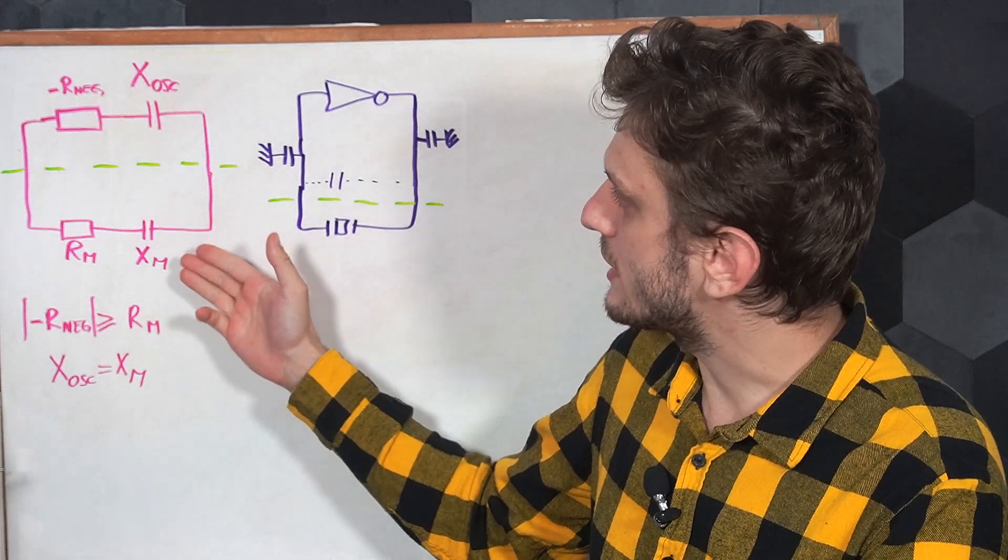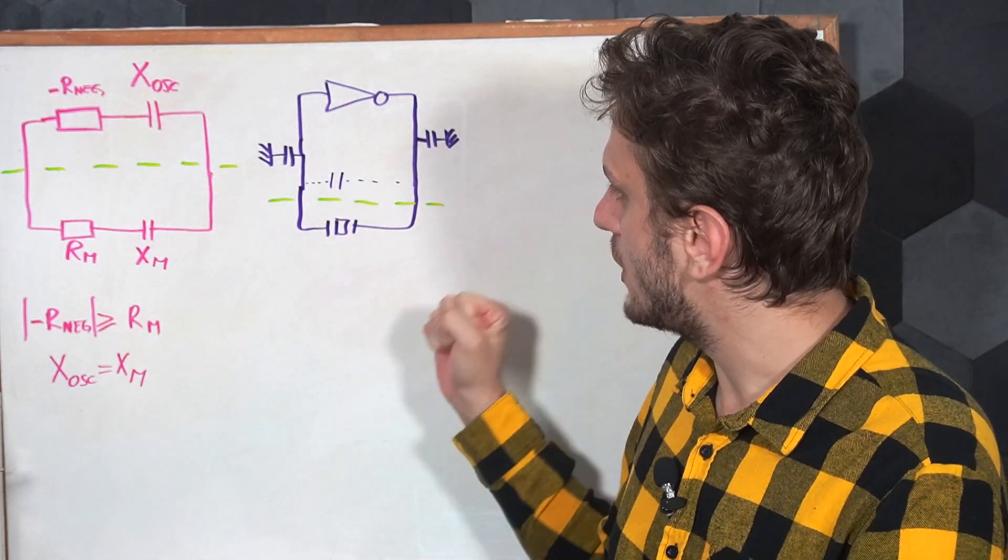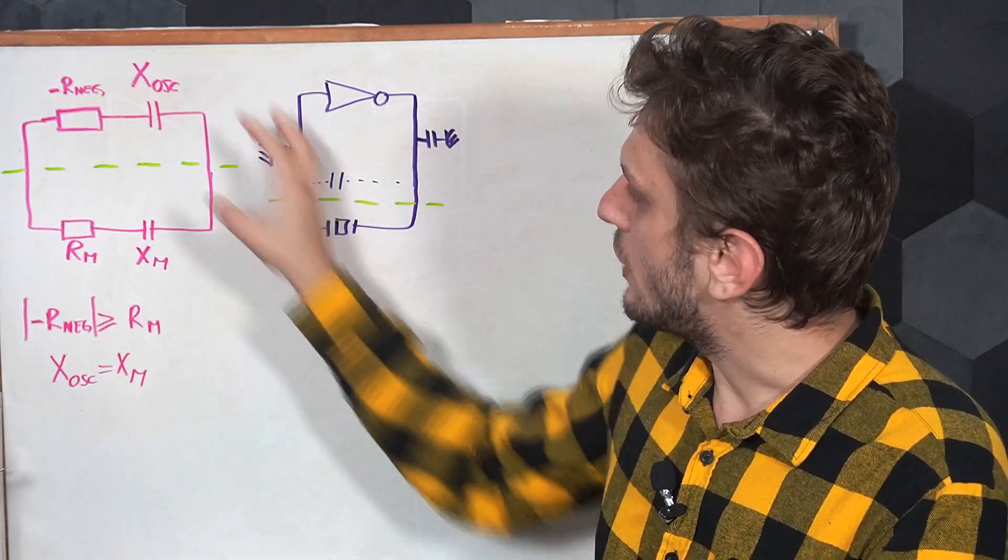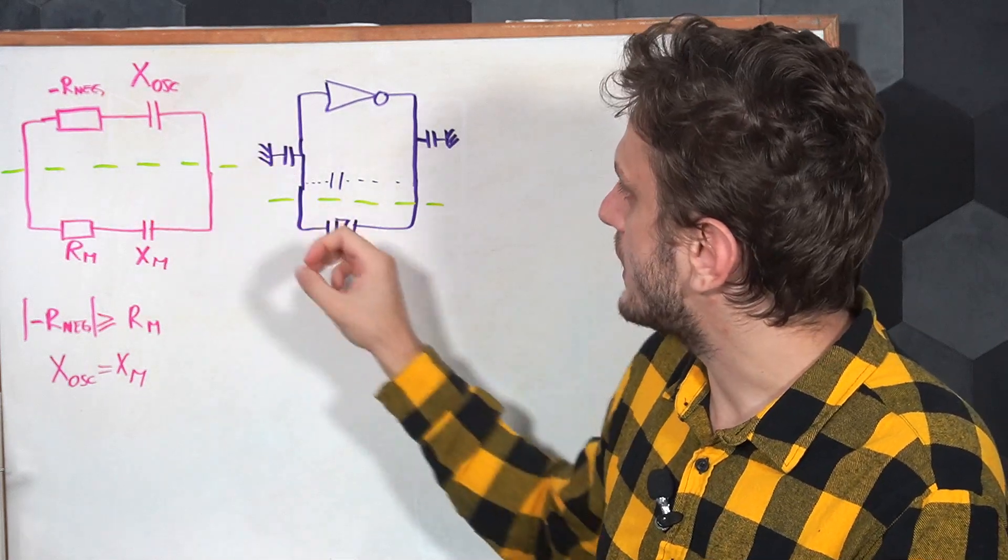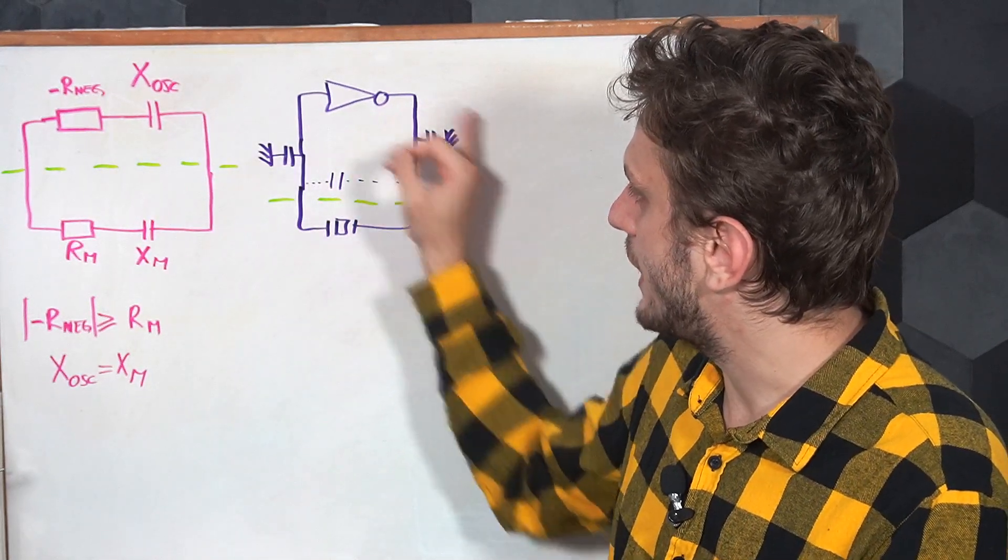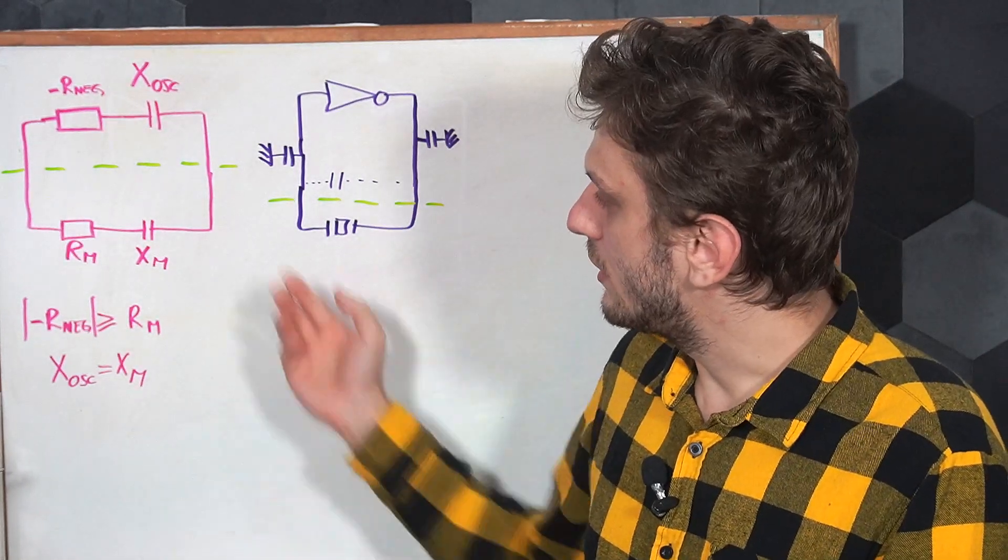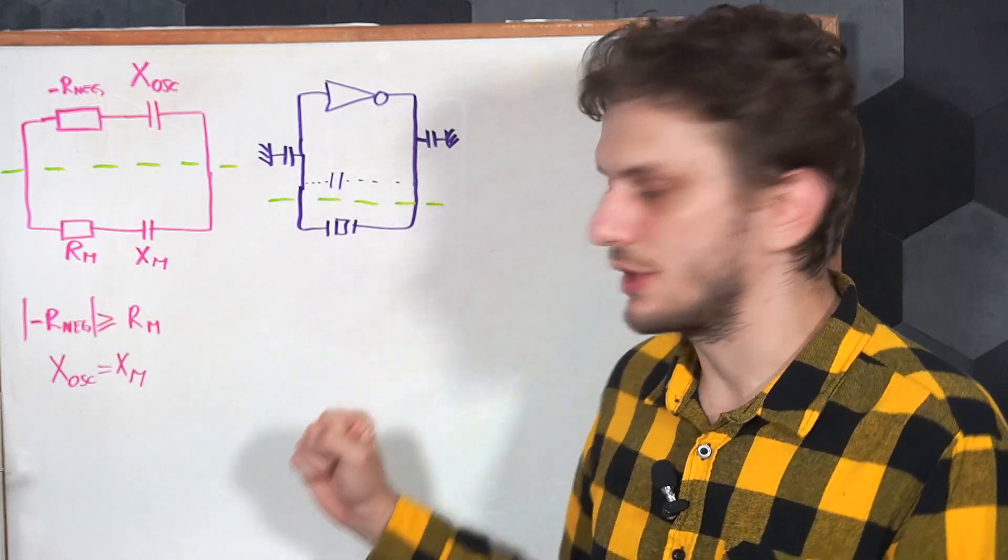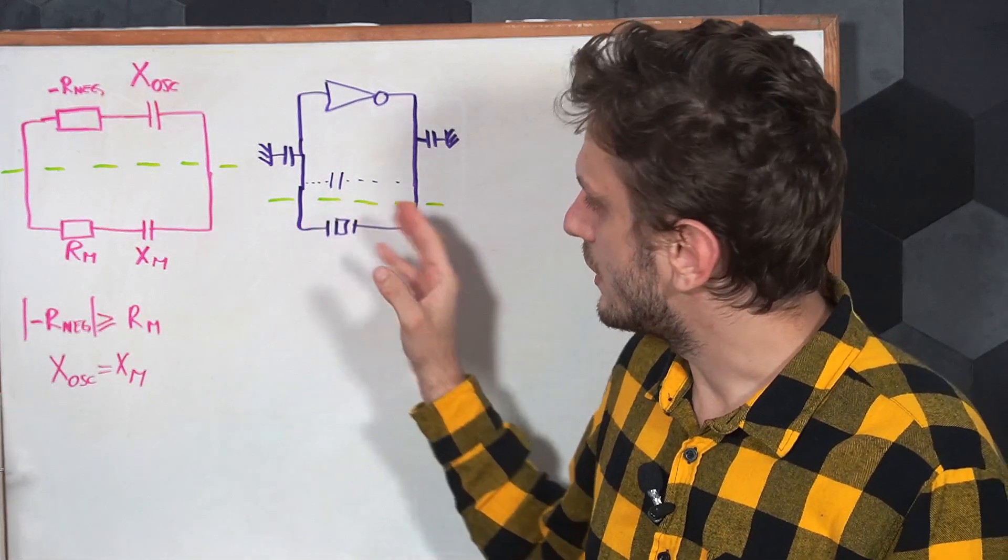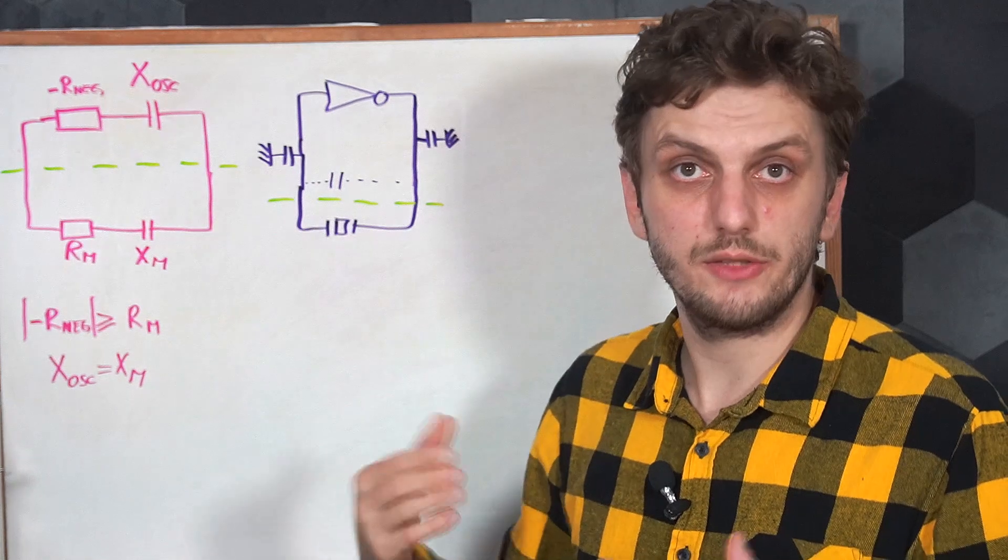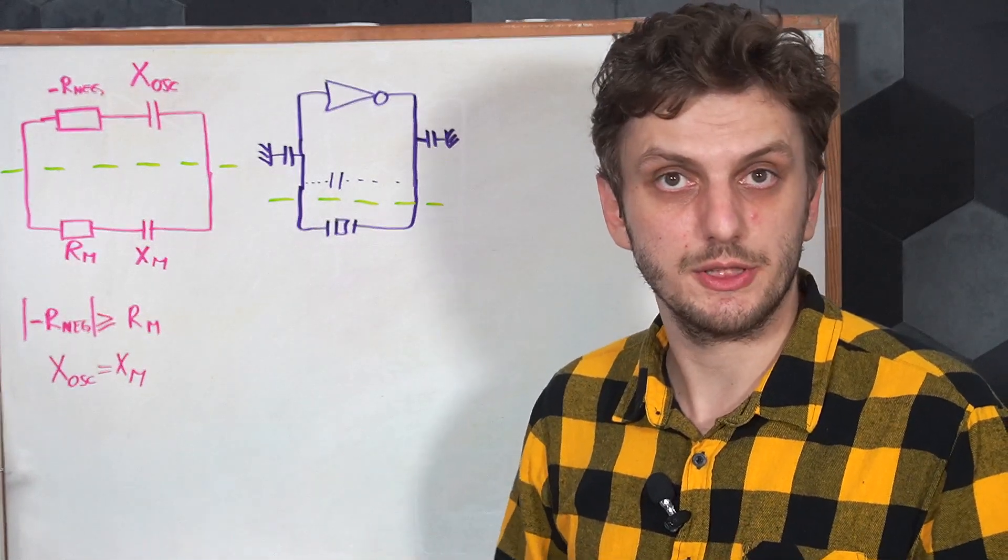Now if we transpose this model onto our crystal oscillator, our negative resistance and oscillator reactance are represented by the amplifier and the load capacitors and any external capacitors, and the motional part of the circuit is the crystal. Now the resistance of the crystal we can figure out, we can calculate it and measure it, it's not that difficult.